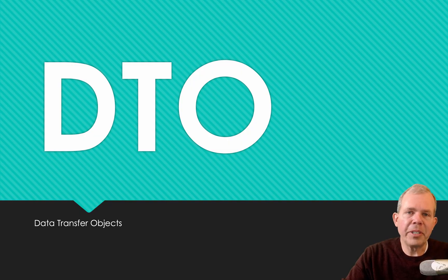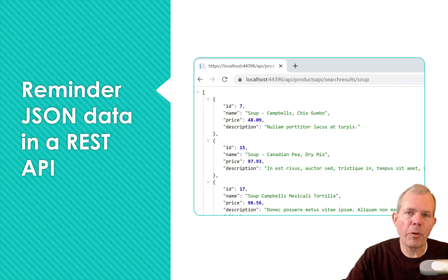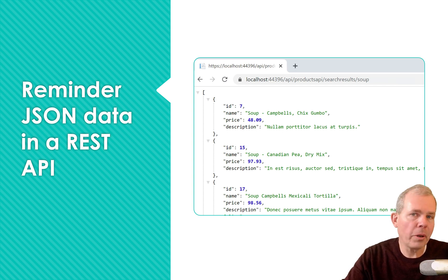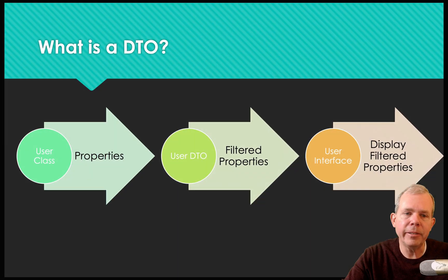In this video we're going to talk about DTOs in software engineering, or data transfer objects. These are important when you consider what you're making in a REST API. We're going to talk about how JSON data can be filtered so that it fits the public-facing part of your application.